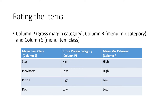How do we get these? We use the gross margin category, or column P, and the menu mix category, or column R. When there's a high gross margin, or contribution margin, and high popularity, you get a star item. With plow horse, you have a low contribution margin and high popularity. With puzzle, you have high gross margin and low popularity. And with dog, you're low on both contribution margin and popularity.